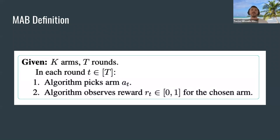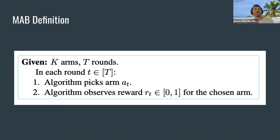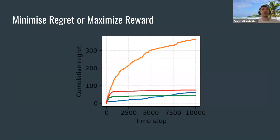The classic MAB problem: we have K arms — K different candidate images for the homepage — and T rounds. We assume a specific time frame to identify the arm with the highest reward. In each round, the algorithm picks an arm and gets feedback from the environment — i.e., a reward. We assume the reward is binary for the chosen arm, and the algorithm learns through this process.